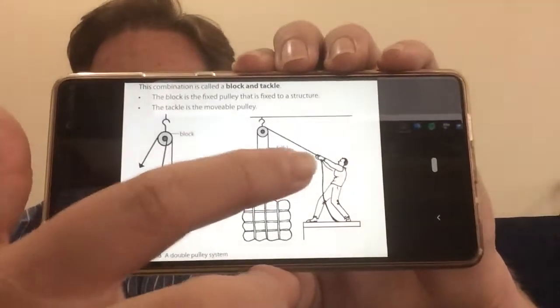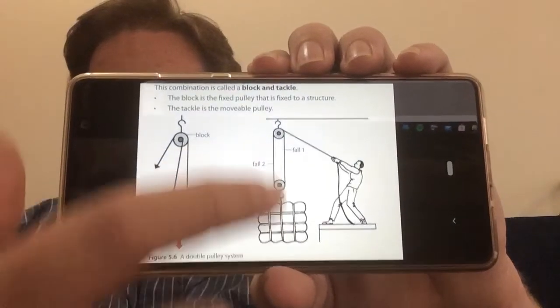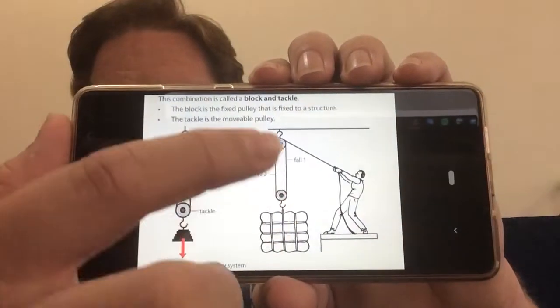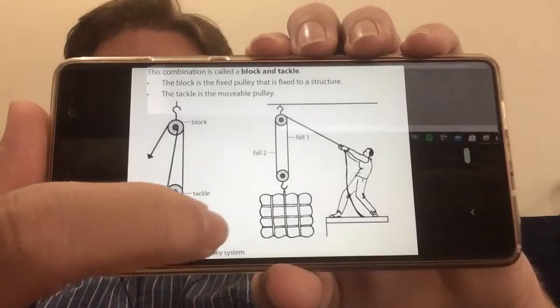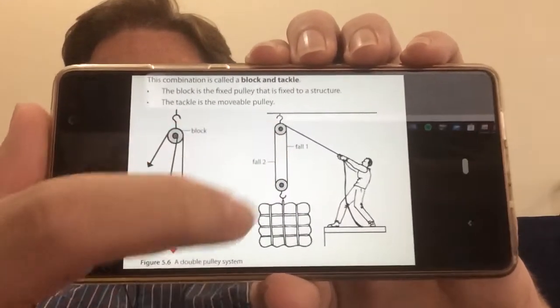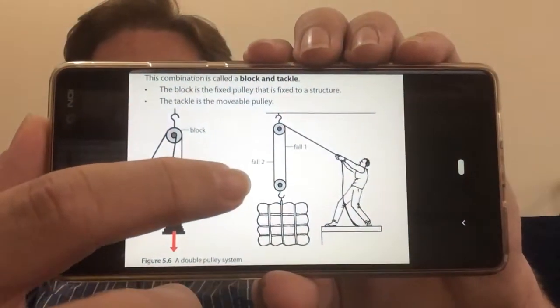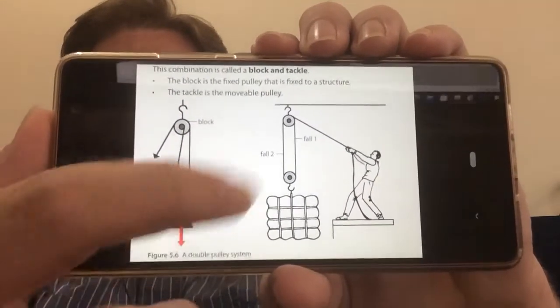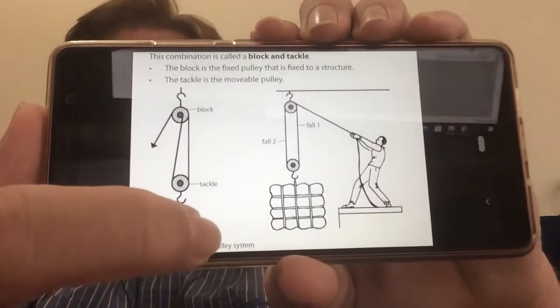The force needed to pull along that rope is a lot less than would normally be required. If he just had a single pulley, he would have to put in all the effort to pull up that heavy object. But because he's using a block and tackle system, the mechanical advantage is double. So it takes half the effort to lift up that heavy object. Obviously, it increases even more if you add more pulleys to the system.